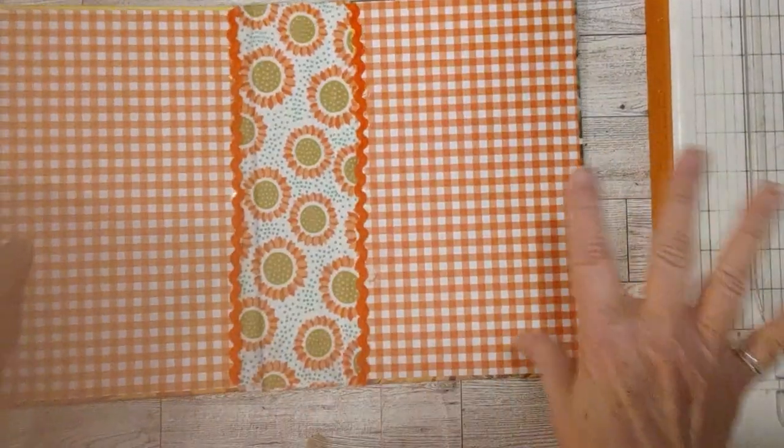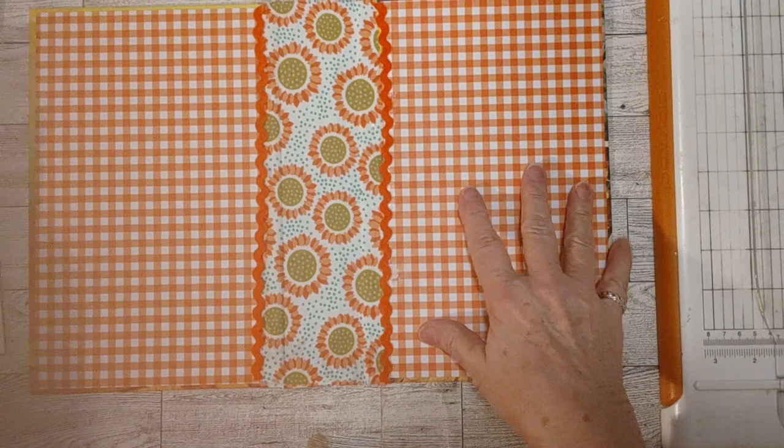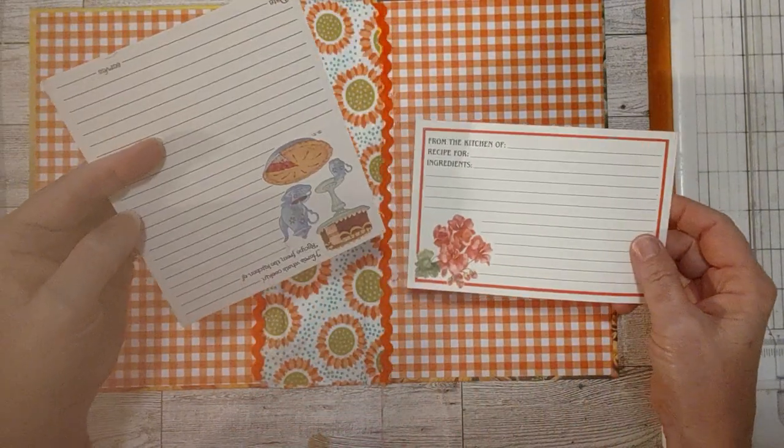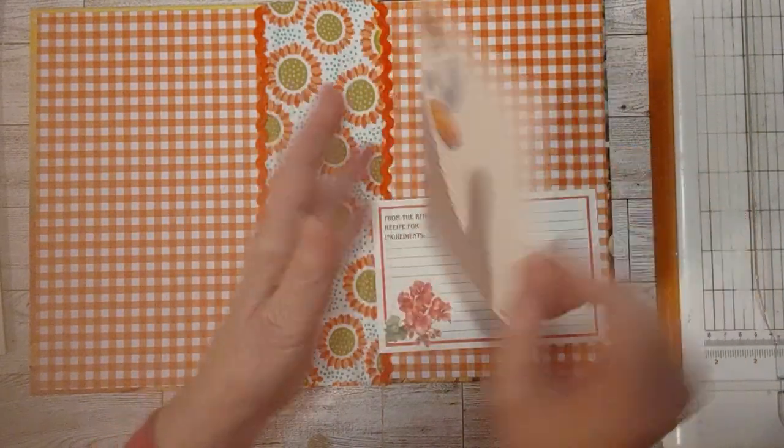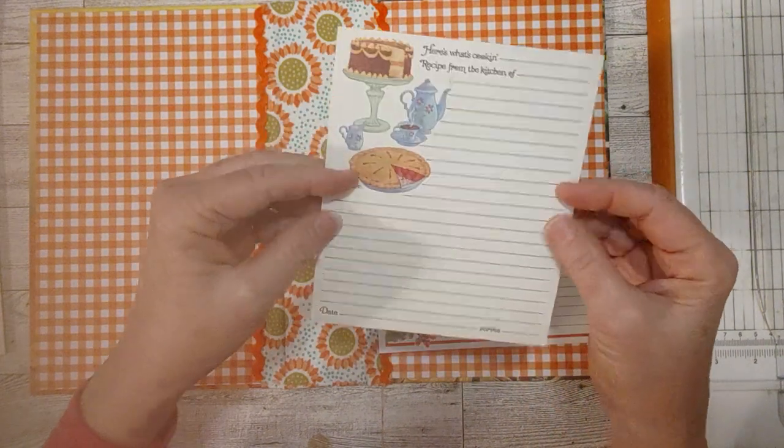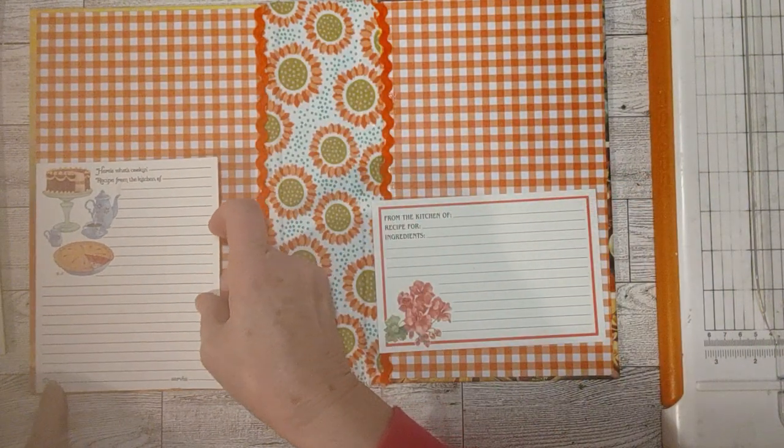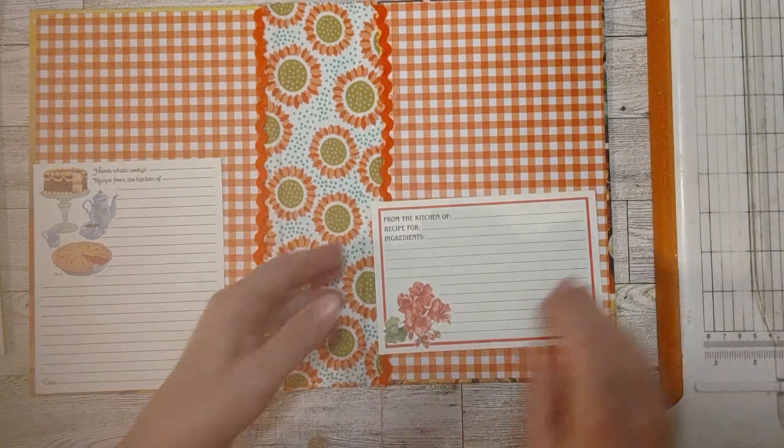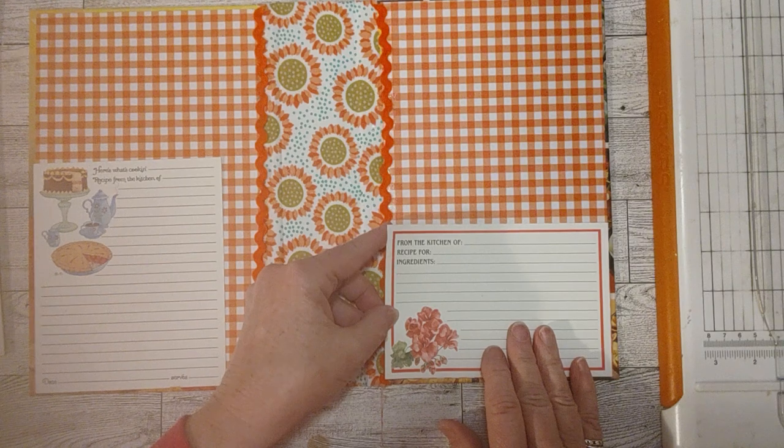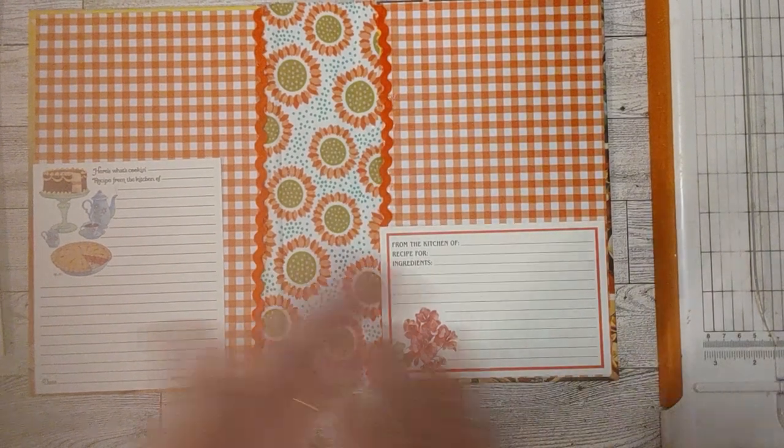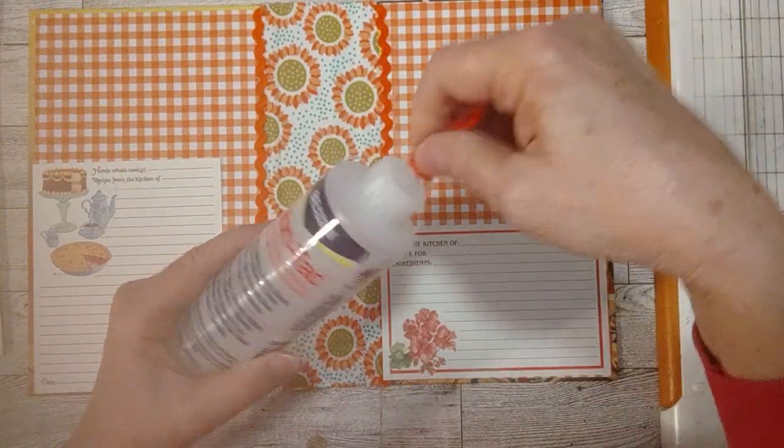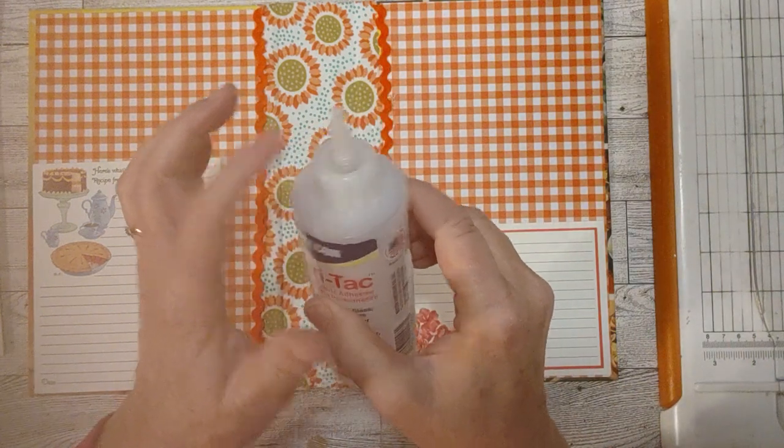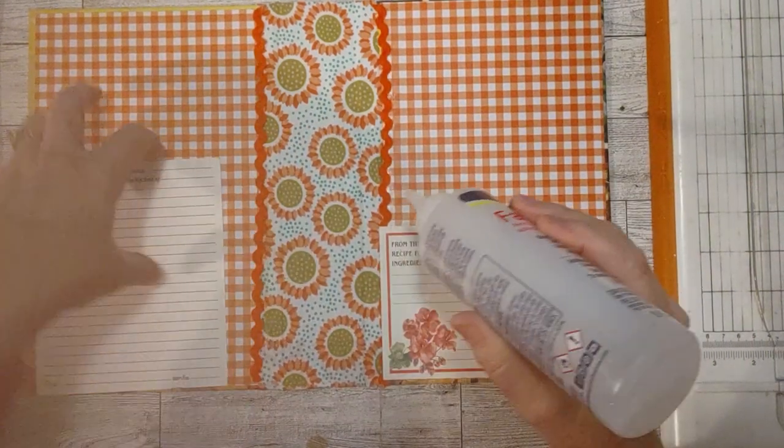I've picked out some paper, some pages. I want to put some pockets in here. These are recipe cards, vintage recipe cards that I picked up. This is a double one but it's never been folded, so I thought this would be a cute pocket. And this one could go here.